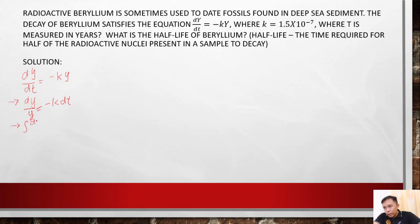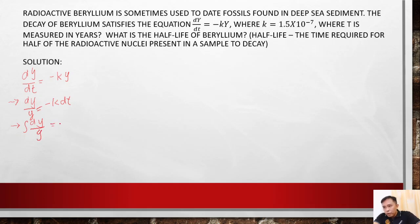Integrating dy over y, and on the right side integrating negative k — since k is a constant, we can take it outside of the integral. We obtain ln y equals negative kt plus c.